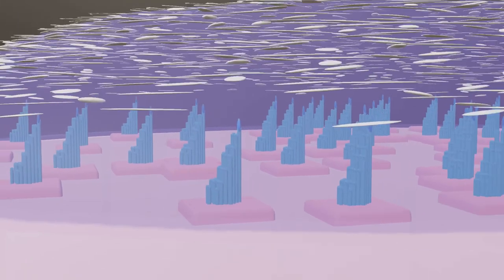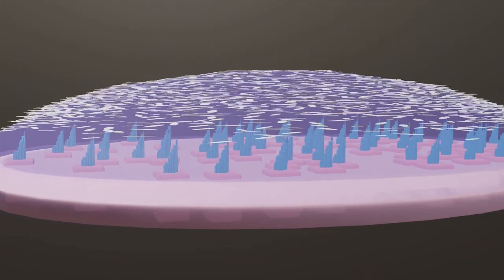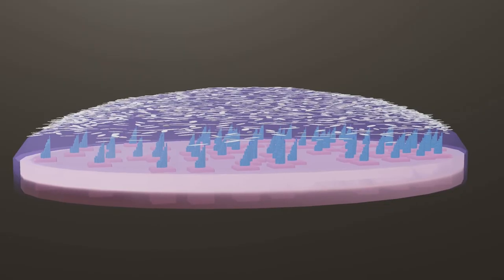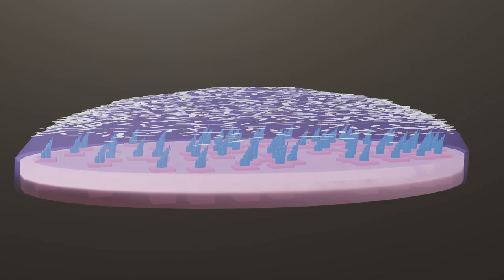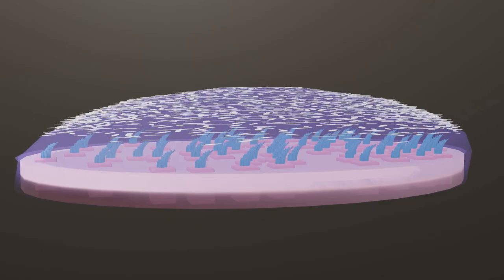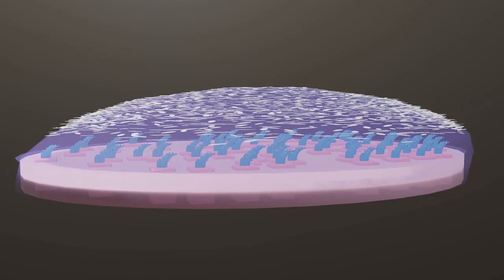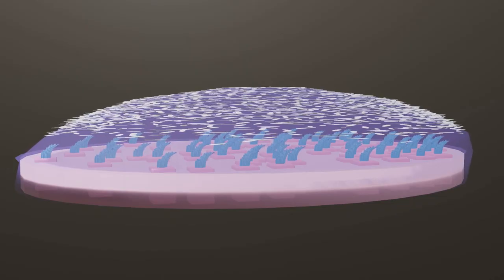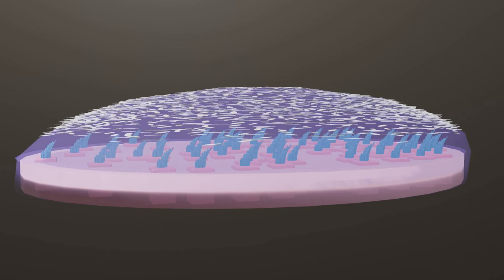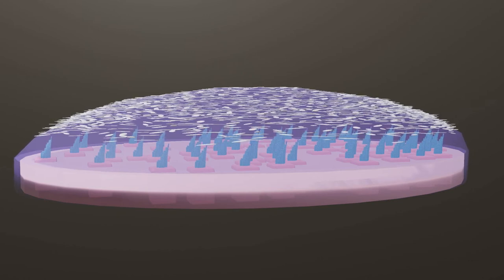Linear acceleration of the macula results in displacement of the otolithic membrane secondary to inertia in the calcium carbonate otoliths. This results in bending of the hair-like structures and a change in impulse frequency to the brain. This is interpreted as linear acceleration.